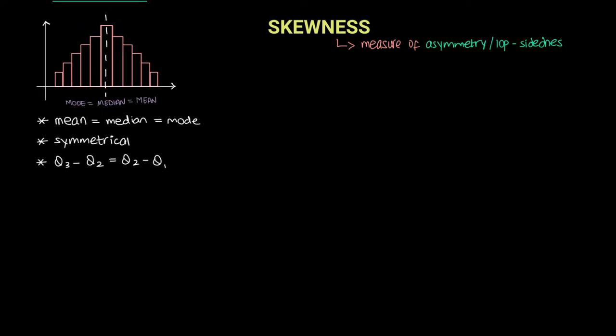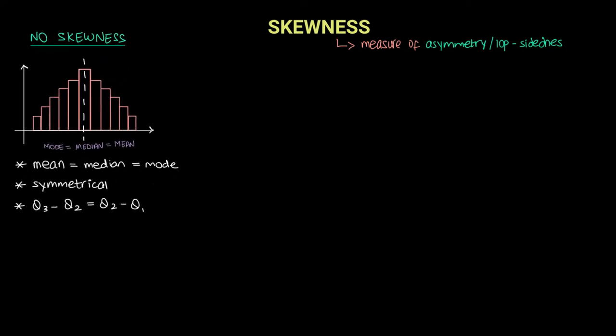In order to understand asymmetry, let's first look at what a symmetrical distribution is. A symmetrical data distribution looks something like this — it is said to have no skewness. The left side of the distribution and the right side of the distribution are mirror images of each other, which implies the data distribution is symmetrical and there is no skewness.